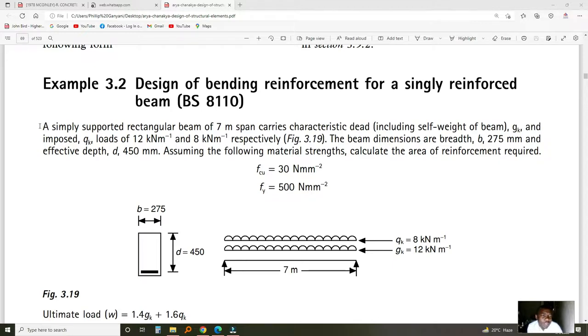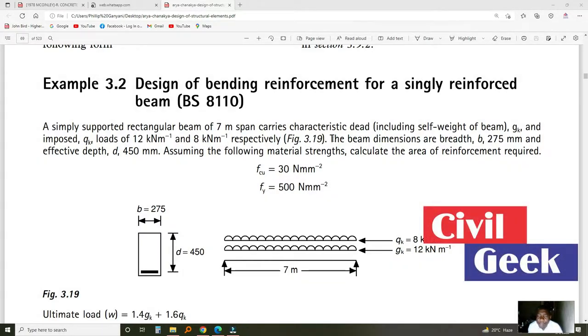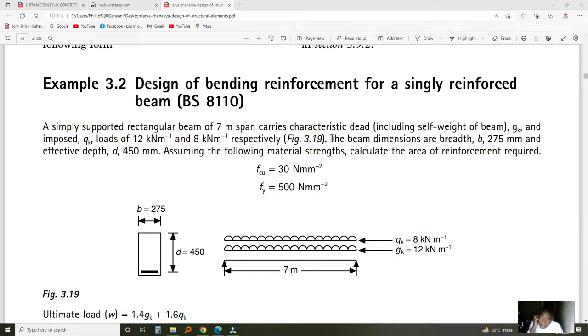A simply supported rectangular beam of 7 meter span carries a characteristic dead load including self-weight GK, and imposed load QK of 12 and 8 respectively. The beam dimensions are breadth of 275 mm and effective depth of 450 mm. Effective depth is from the top to the center of reinforcement at the bottom.